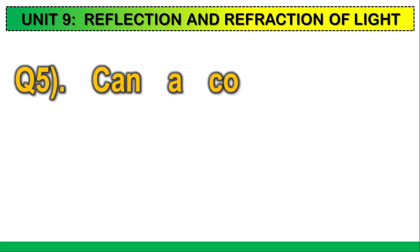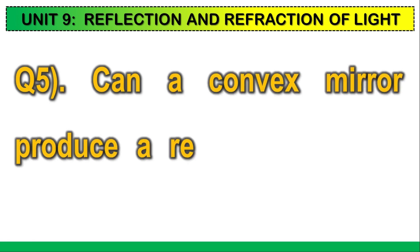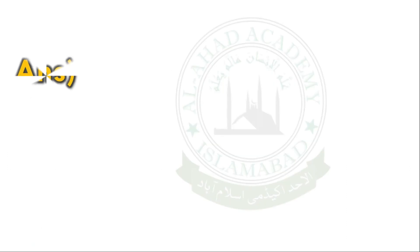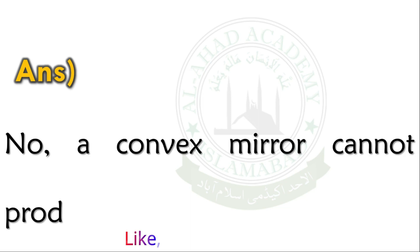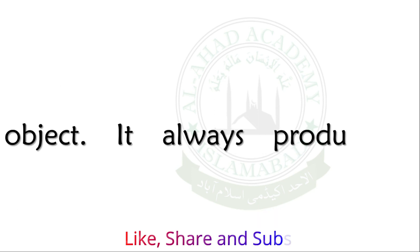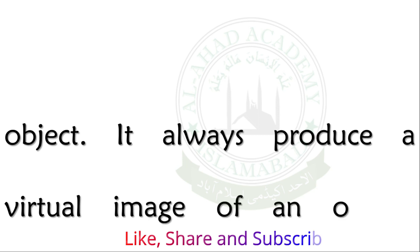Question number five. Can a convex mirror produce a real image of an object? No, a convex mirror cannot produce a real image of an object. It always produces a virtual image of an object.